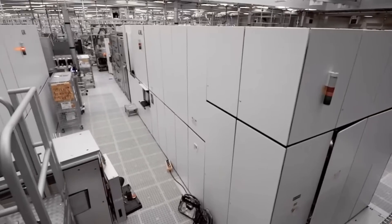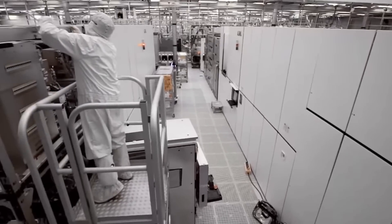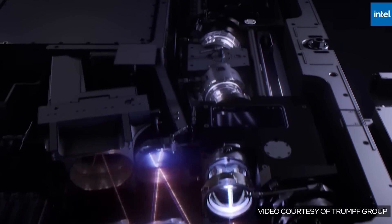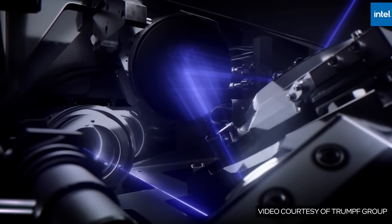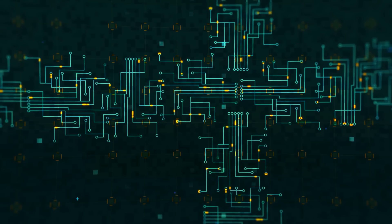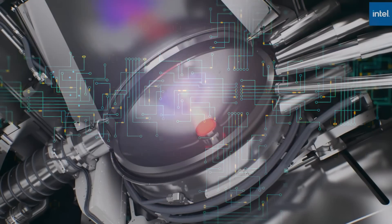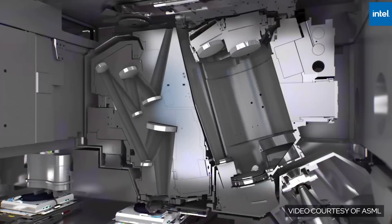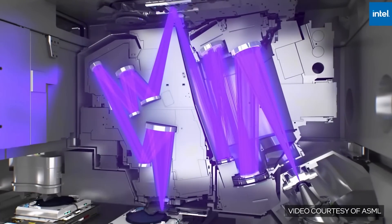Their city bus-sized special machines, which cost about $140 million each, shine unimaginably narrow beams of light onto silicon wafers in order to carve out intricate patterns. These patterns form the shapes of transistors and circuits.